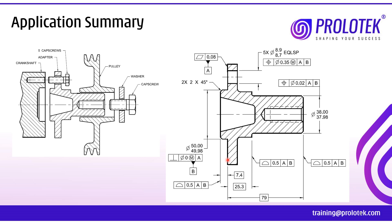Under form controls we have straightness, flatness, circularity, and cylindricity. Since this is a prismatic feature, circularity and cylindricity are ruled out — they apply only to axis symmetric features. That leaves straightness and flatness. As discussed in other videos, flatness is better than straightness for prismatic features. So we give flatness to this surface and then take it as datum A.